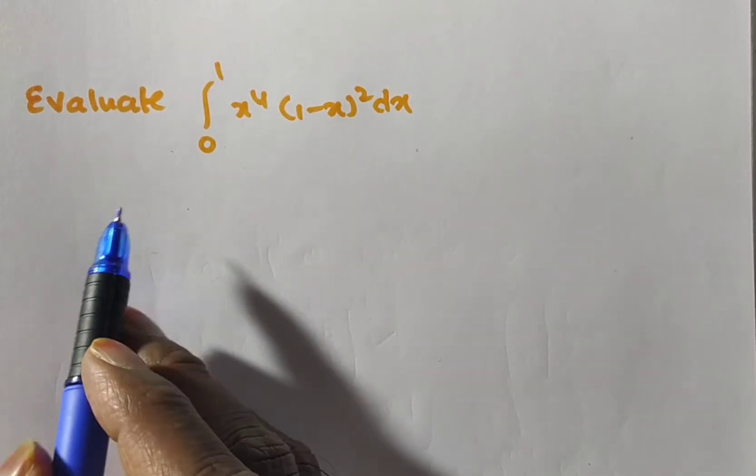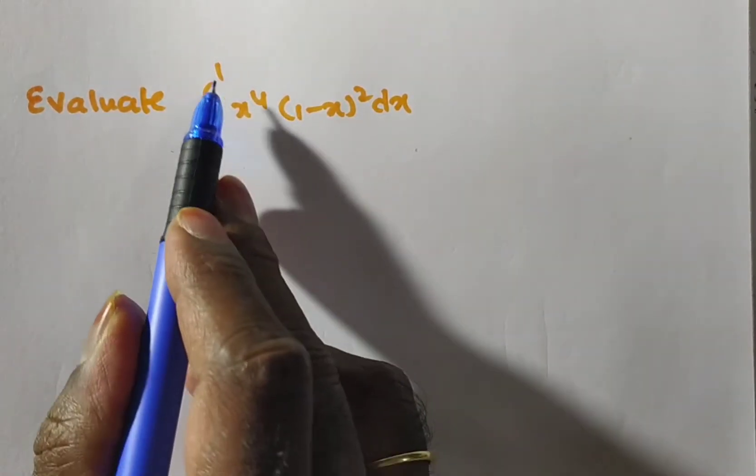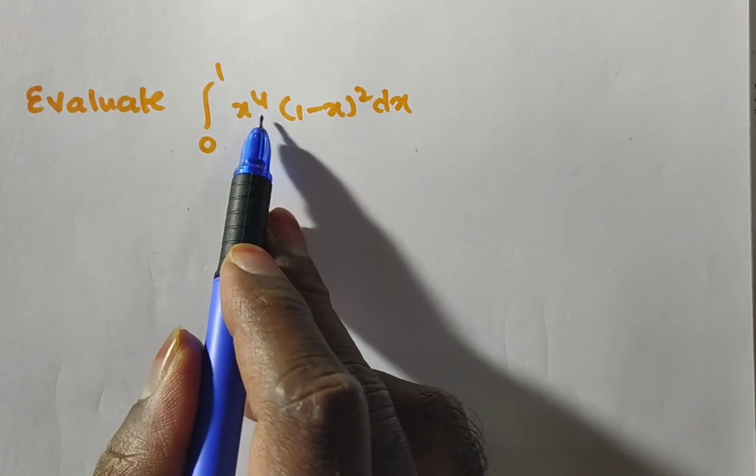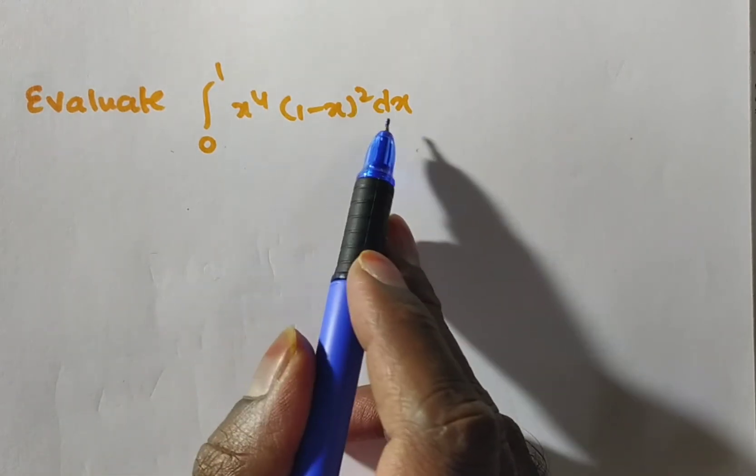Hi friends, the given problem is evaluate integral 0 to 1 x to the power of 4 into 1 minus x to the power 2 dx.